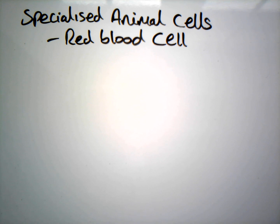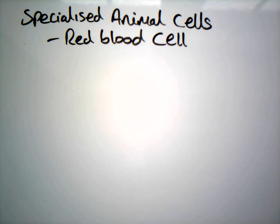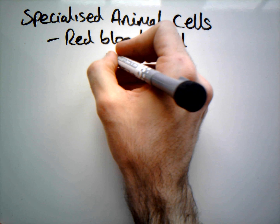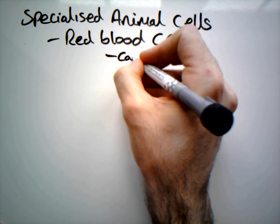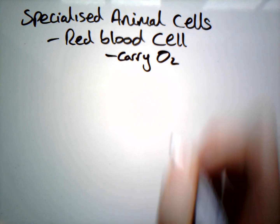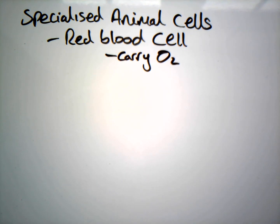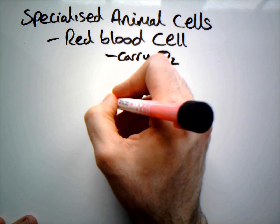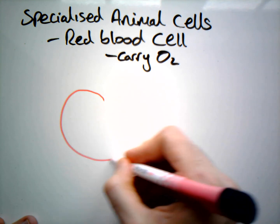Let's take a look at a red blood cell and how it's adapted to its function. Its primary function is to carry oxygen around the body, and it has quite a unique structure and function to do this.